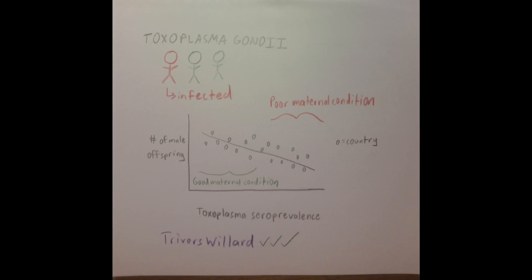Toxoplasma seroprevalence was found to be one of the strongest predictors of sex ratio at birth. Lower toxoplasma seroprevalence was associated with a greater number of male offspring.